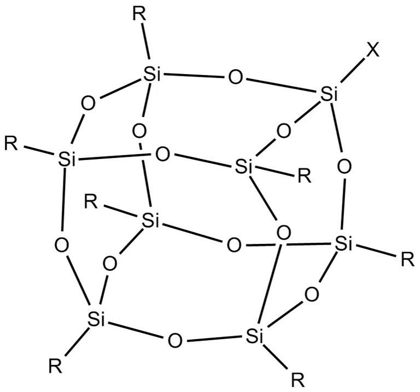Structure. Silsesquioxanes are known in molecular form with 6, 8, 10, and 12 Si vertices, as well as polymers. The cages are sometimes labeled T6, T8, T10, and T12 respectively, where T equals tetrahedral vertex.